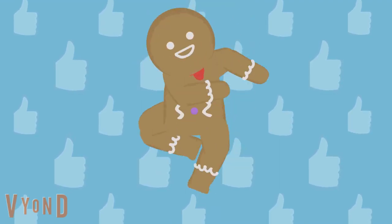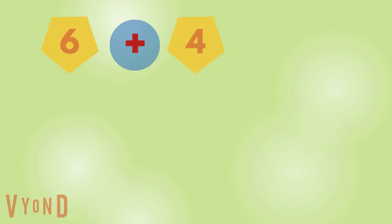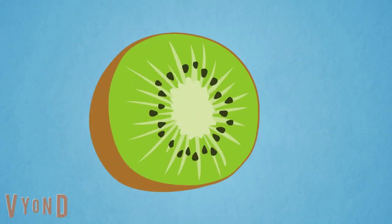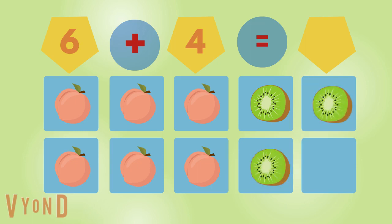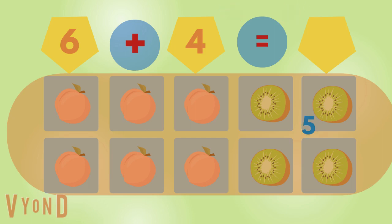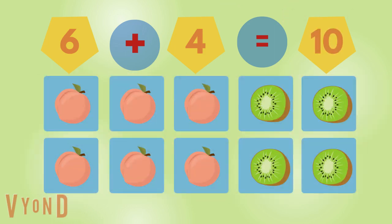Well done. Peach. One, two, three, four, five, six. Six peaches. Kiwi. One, two, three, four. Four kiwis. One, two, three, four, five, six, seven, eight, nine, ten. Ten fruits.